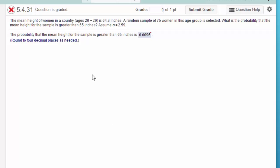This first problem that you missed has to do with the mean height of women in the country. This tells me this is the population, we're talking about all the women in the country and their mean height is 64.3 inches. We took a sample of 75 women and we want to know what is the probability that the mean height in the sample is greater than 65 inches.